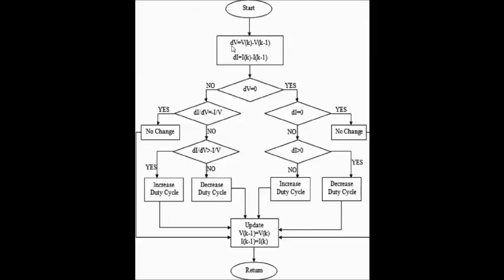If the change in voltage is zero — by comparing the present voltage and the previous voltage — it will then check whether the change in current is zero. If the change in current is zero, that is the maximum power point, so there is no need to change the pulse width modulation. The control will come here and update the voltage and current.